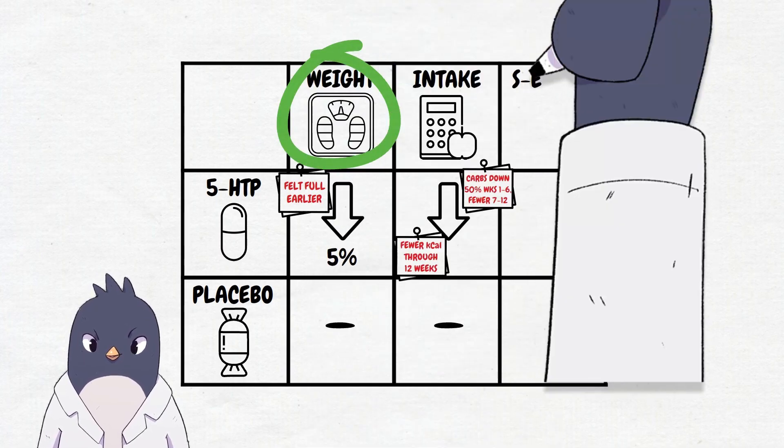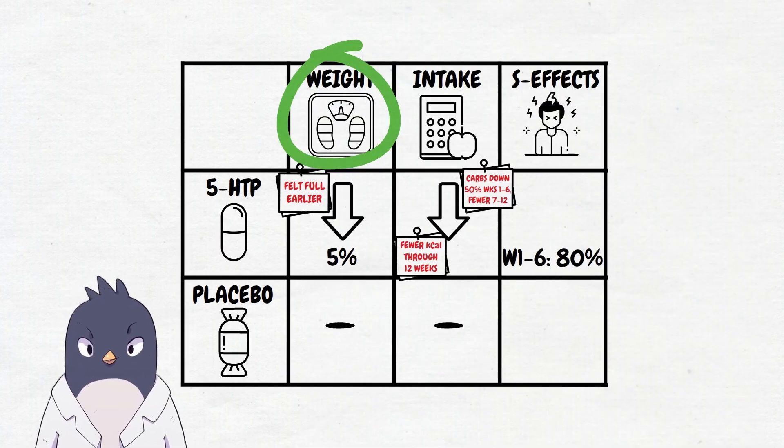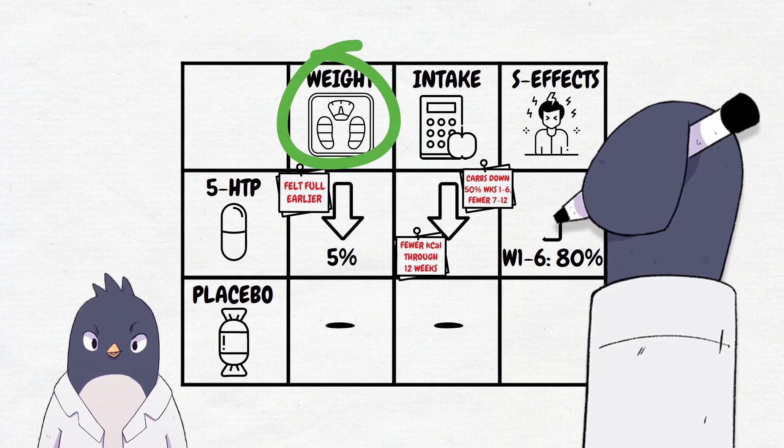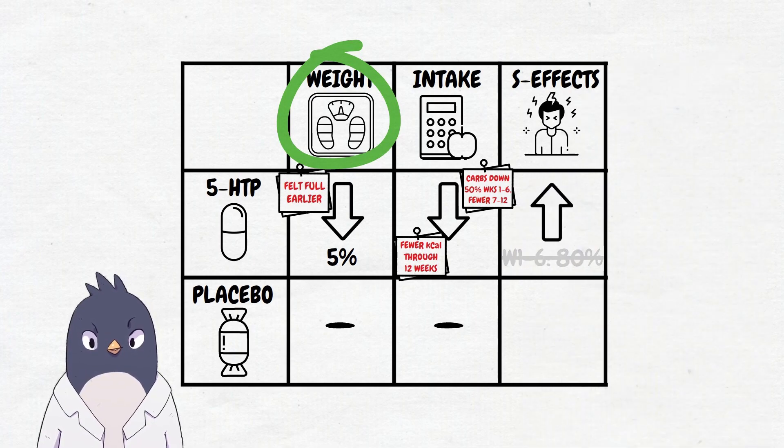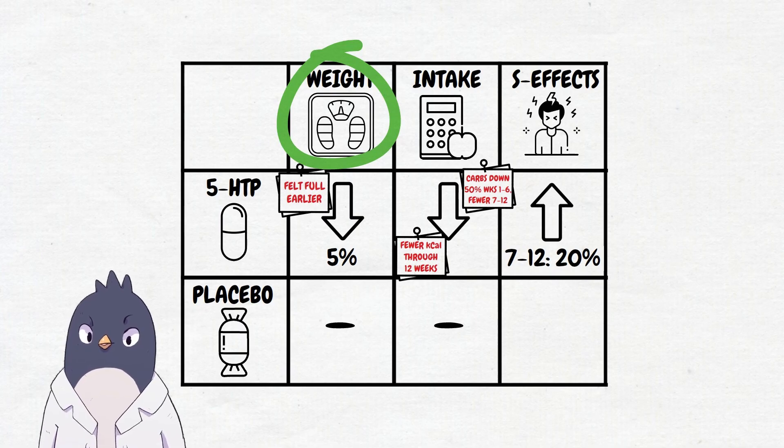So the weight loss bit seemed to work, but were there side effects? In the first six weeks, 80% of the 5-HTP group reported feeling nausea. This decreased to 20% in the last six weeks, but that is a pretty unpleasant side effect.